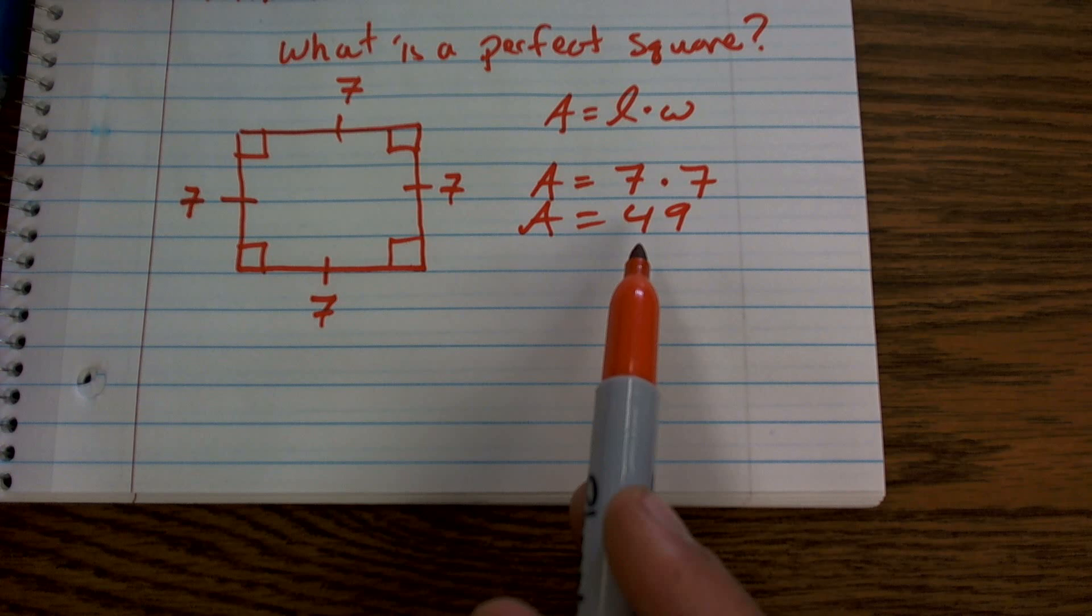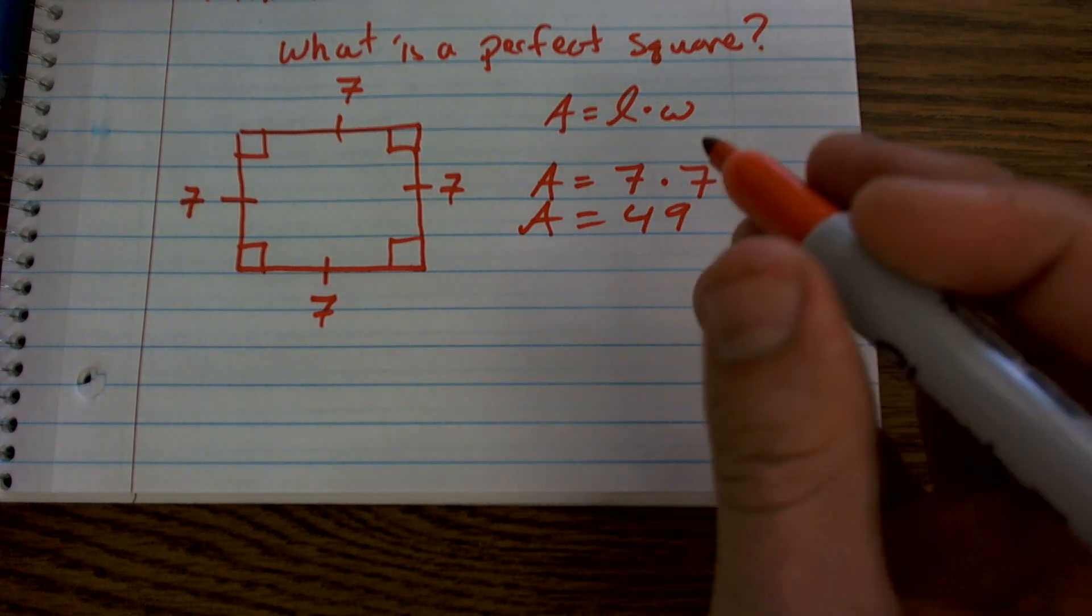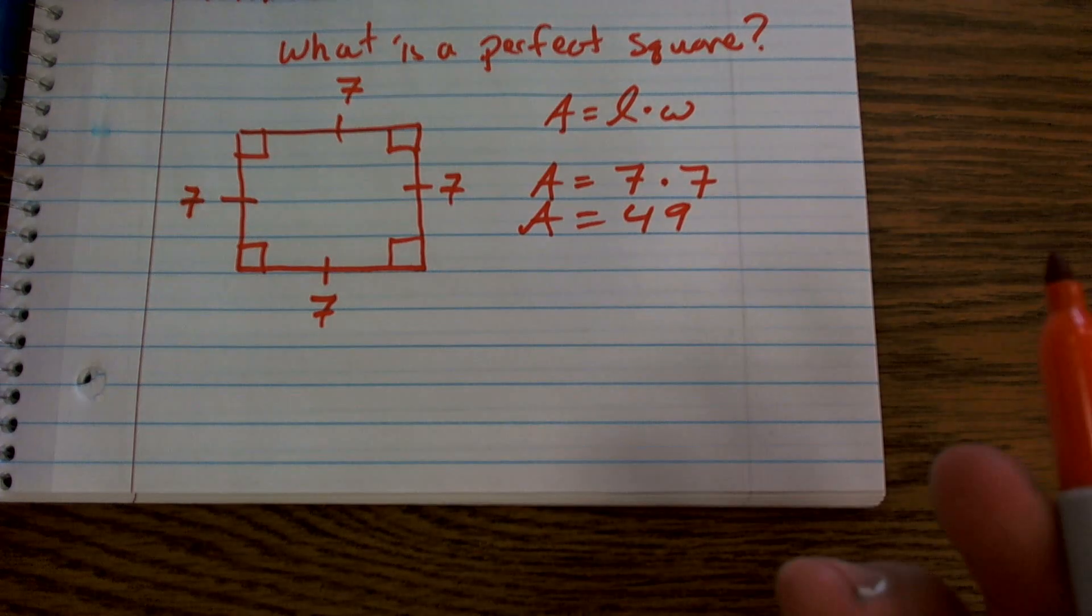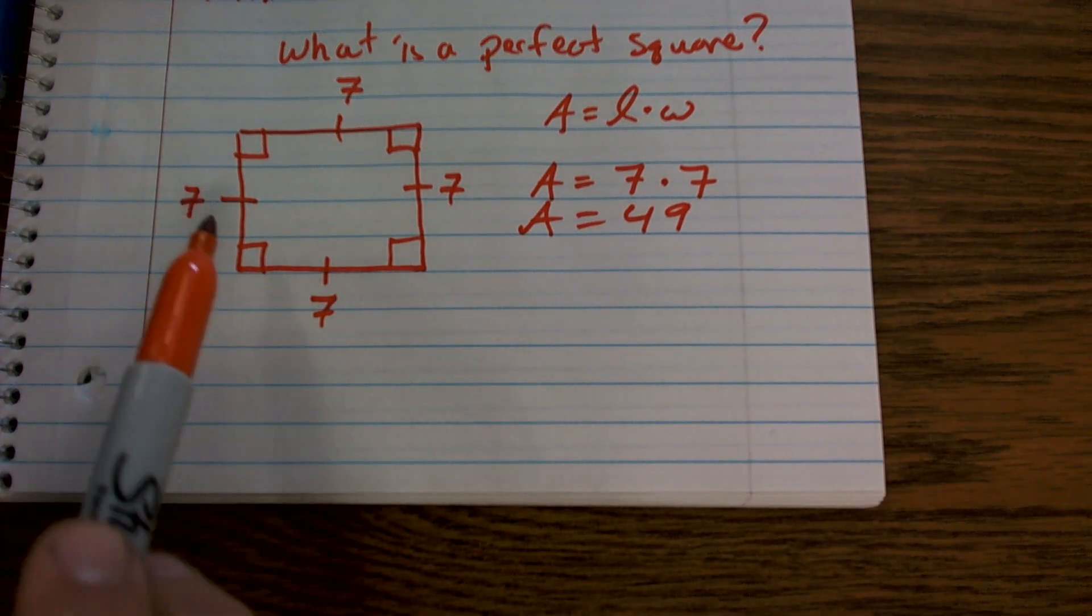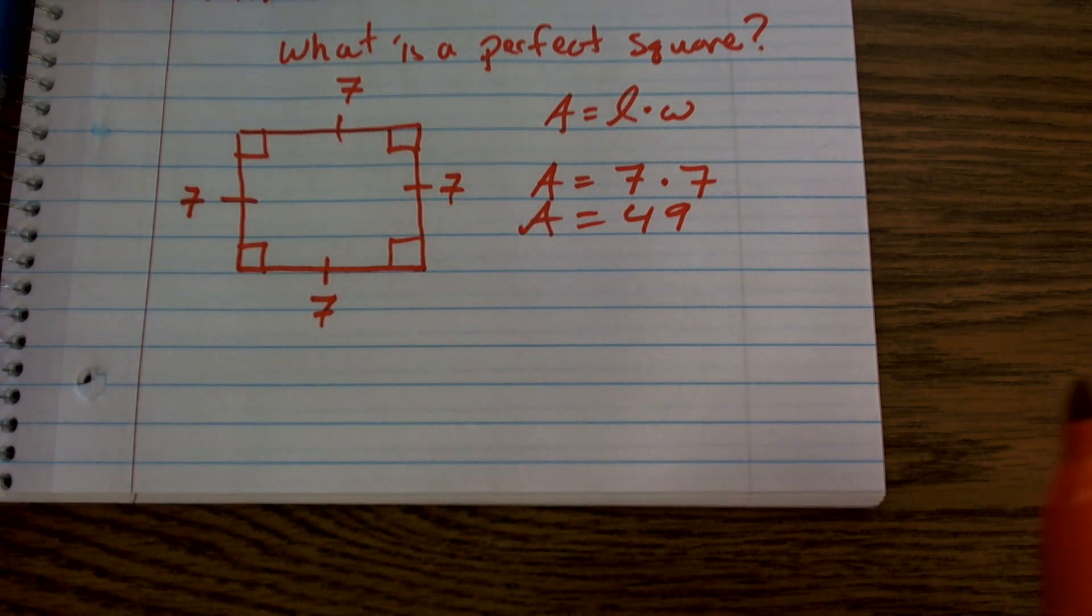So when we don't have a perfect square, let's say if our area was 50, we couldn't have two side lengths that would be exactly the same that would multiply to give us 50. So therefore, 50 is not a perfect square.